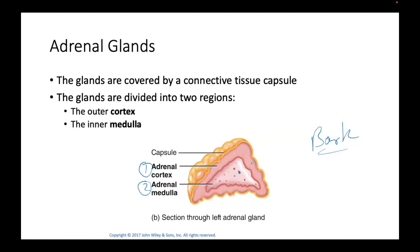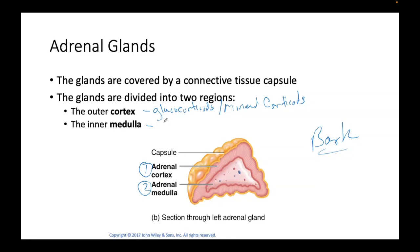Histologically, the adrenal cortex has several layers to it, which we will go over. The adrenal cortex — the outer part — makes glucocorticoids and mineralocorticoids. The inner part, which is the adrenal medulla, is going to make your norepinephrine and your epinephrine.